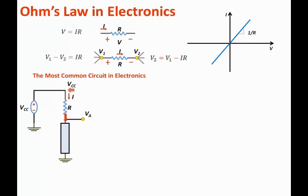Visualizing the behavior of the circuit is key in understanding electronic circuits. Again, the voltage at VA drops from VCC as the current flows through the resistor. Or we can state that VA is equal to VCC minus I times R. This equation is Ohm's law that was derived earlier.